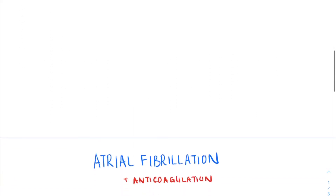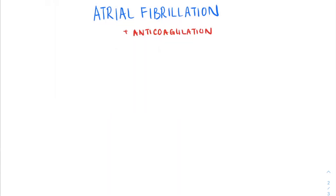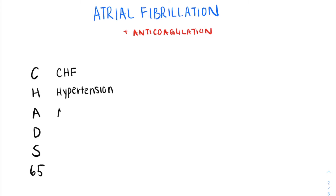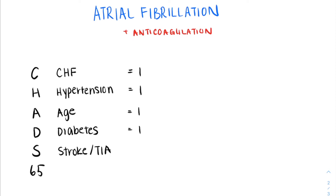When we talk about atrial fibrillation, the first thing we should calculate is the annual risk of stroke, and this can actually be done with a CHADS score. A patient might have a history of congestive heart failure, hypertension, age greater than 65, diabetes, or stroke or TIA. Each aspect of the CHADS score is a risk factor for stroke. The first four are worth one point each on our scoring system, while the history of stroke or TIA is worth two points, out of a total of six. When we calculate our CHADS score, each score corresponds to a certain annual risk of stroke, and this can be found easily on a point-of-care application. The importance is to be able to interpret the total score.